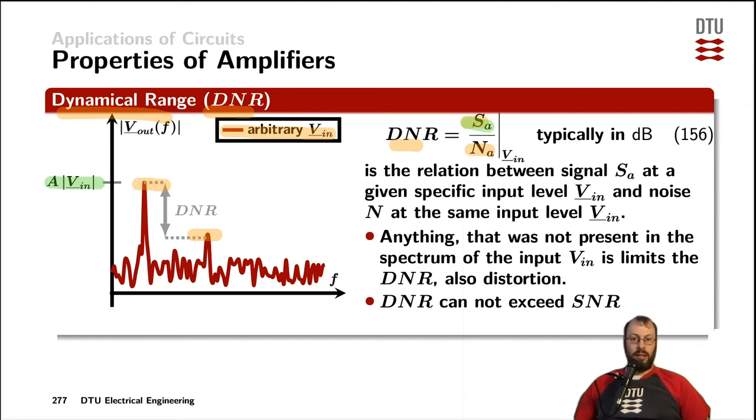And anything else, the highest peak of whatever is else coming out of the amplifier, for example, distortion, is considered the noise value.